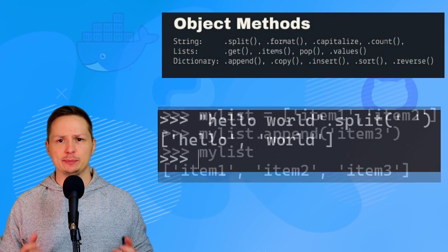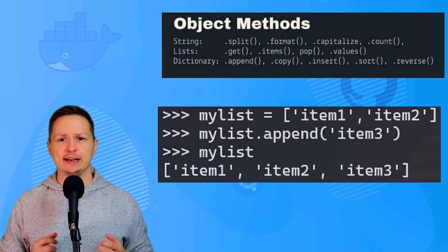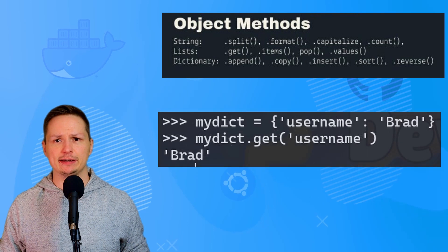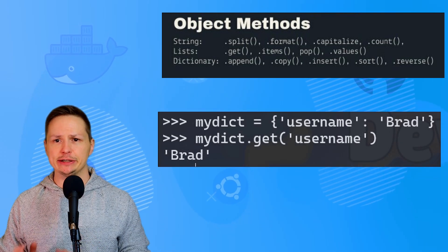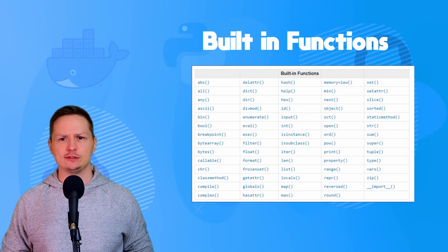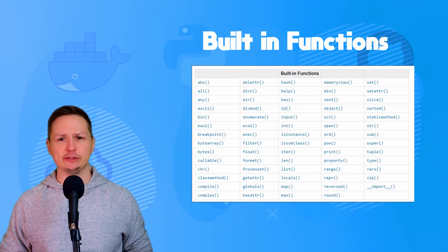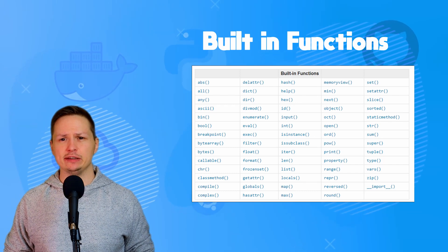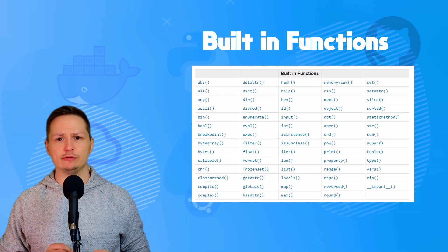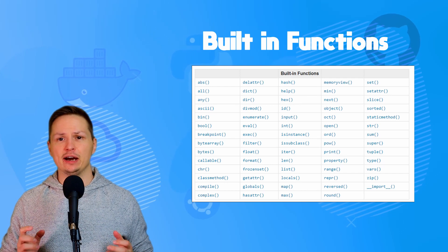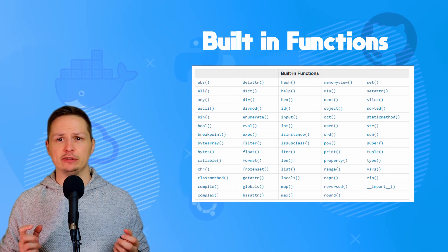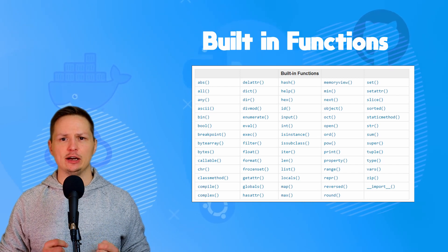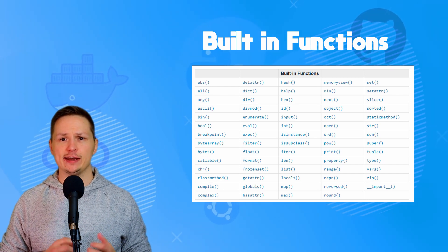A common list method is 'append', which adds an item to the end of a list. A common dictionary method is 'get', which retrieves the value of a dictionary key. Built-in functions are functions already built into Python. Ones I commonly use are 'help', 'dir', 'vars', and 'type'. The built-in 'input' function, mentioned earlier, allows you to take input from a user.